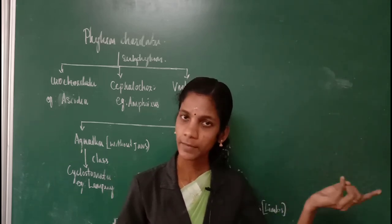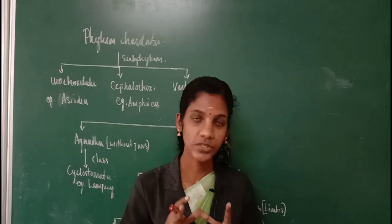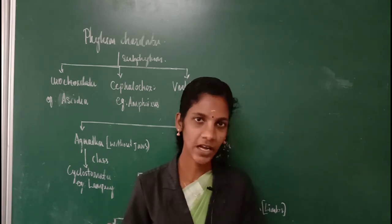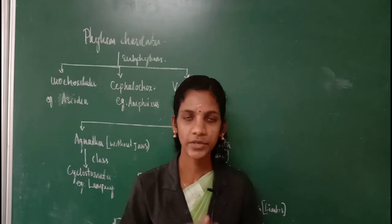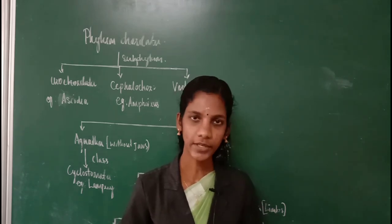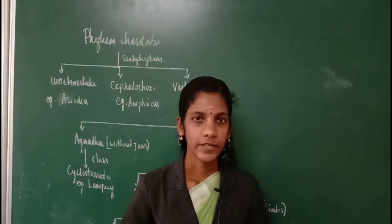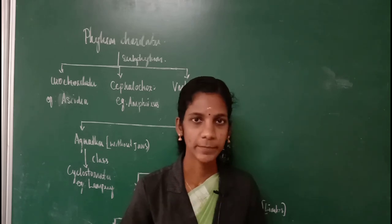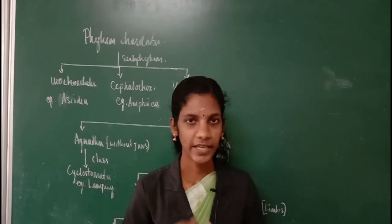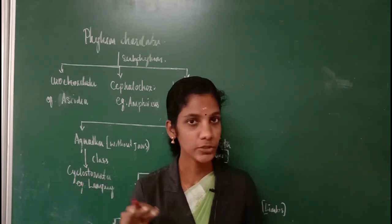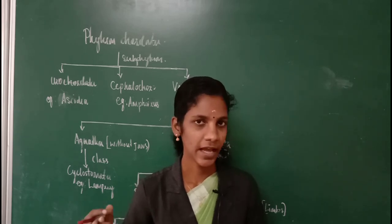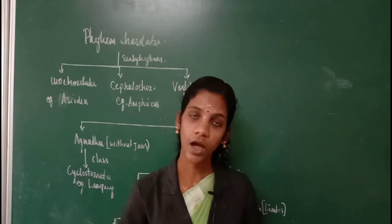Fishes have protective structures of dermal scales. Fishes will always have gills as their respiratory structure because they are aquatic animals. Tetrapoda will always have lungs or skin as respiratory organs. Tetra poda may have a three or four-chambered heart.